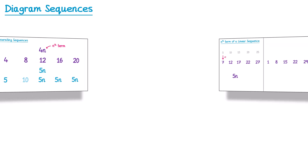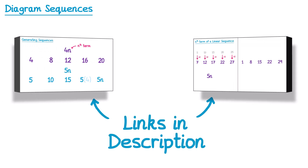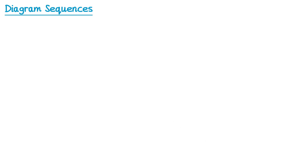In this video I am going to assume you already know how to generate a sequence and find the nth term of a sequence. If you are unsure how to do either of these I'd recommend checking out my videos on those first. There will be links to those in this video's description. In this video we're going to look at sequences that are represented in diagrams. Each of the diagrams is sometimes known as a pattern.